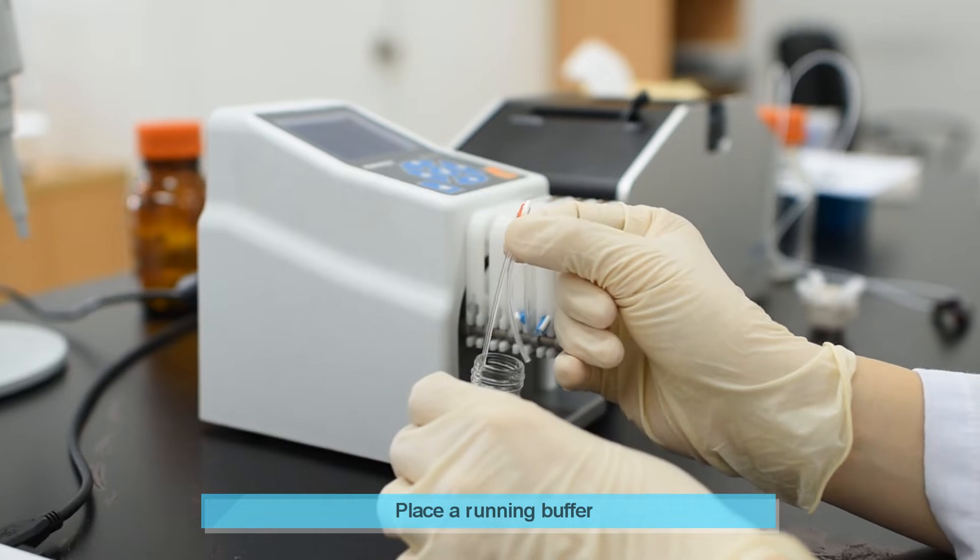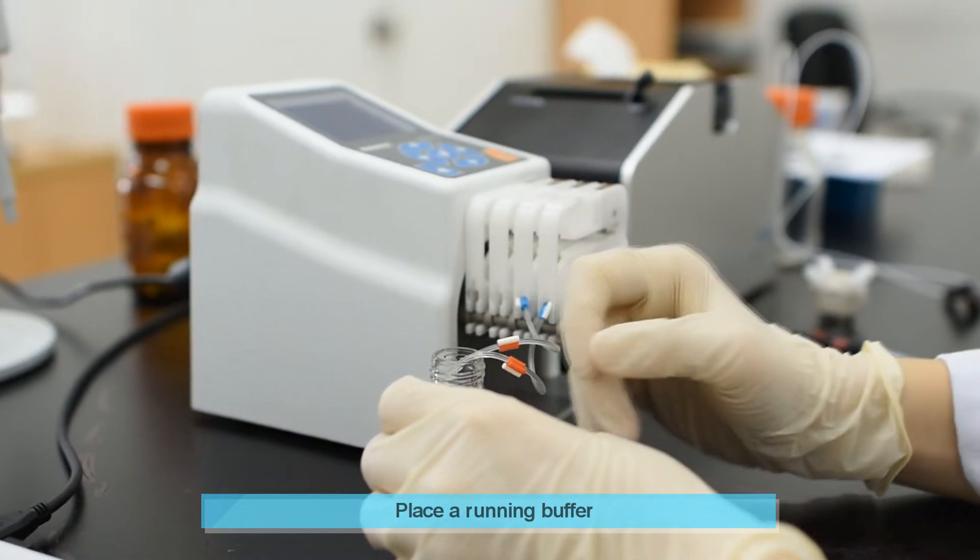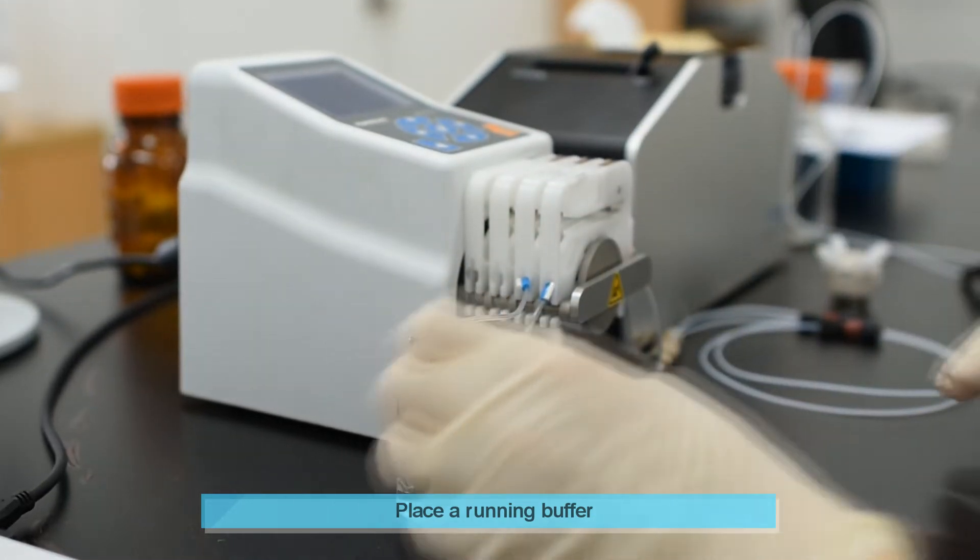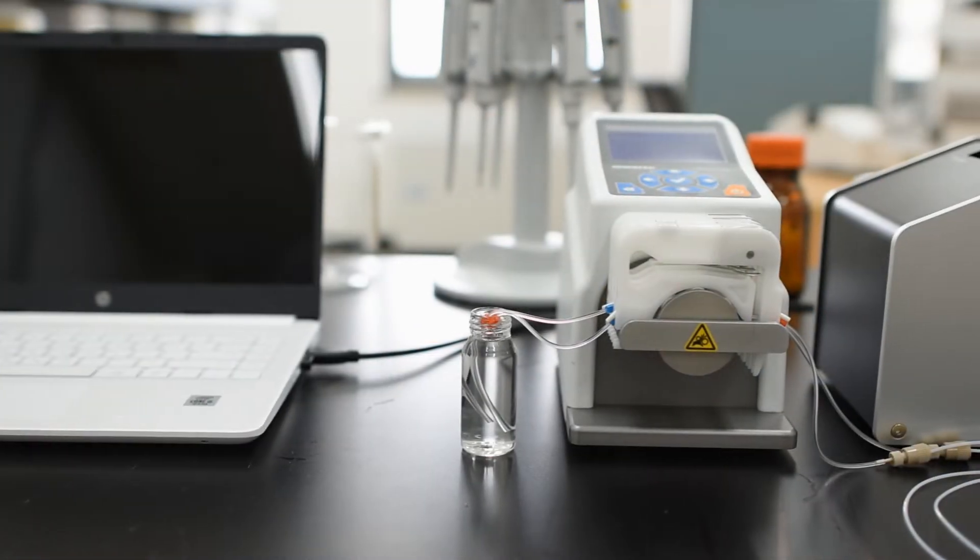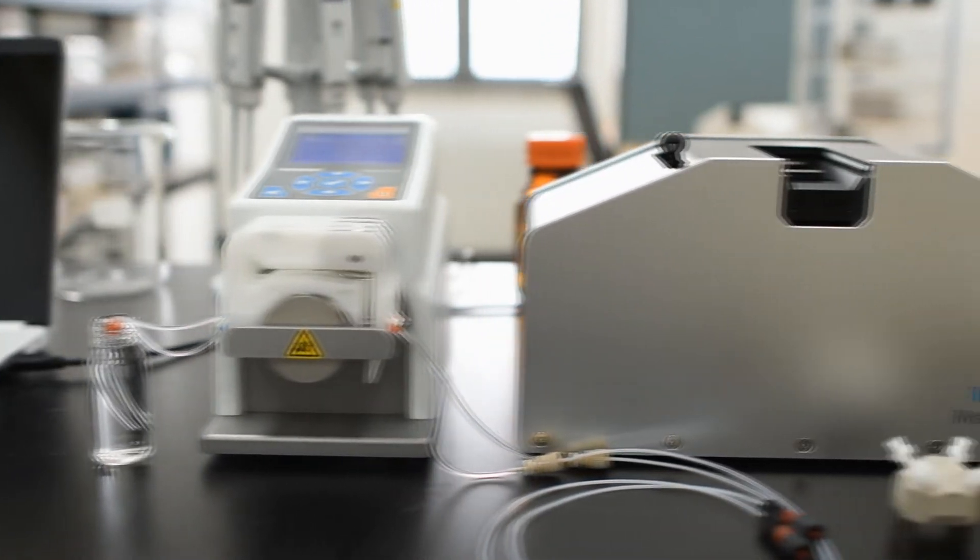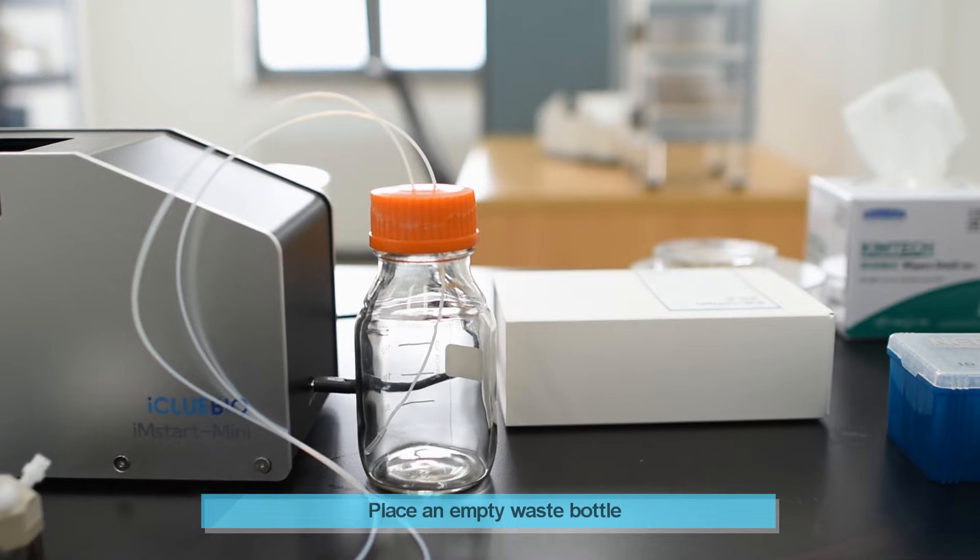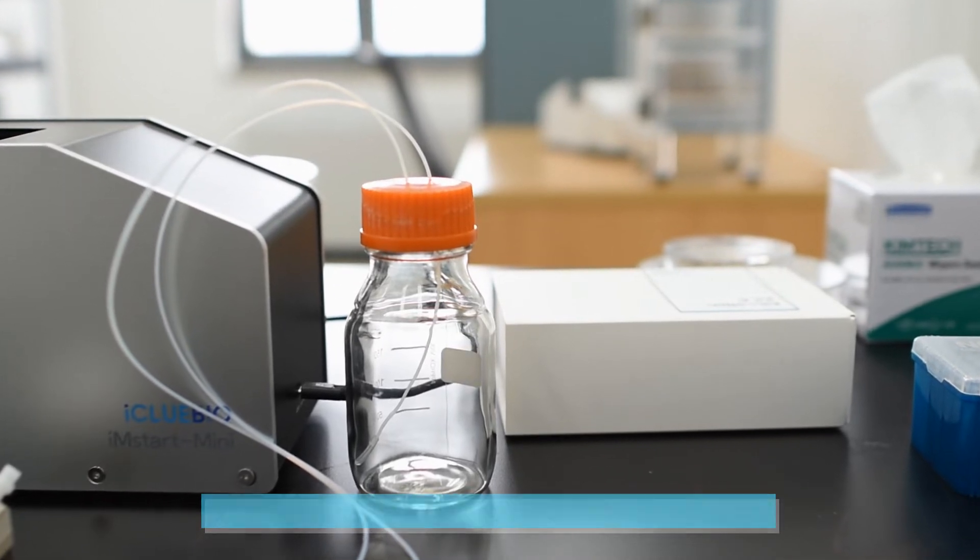Place your running buffer on the left side of the pump, and place the waste bottle on the right side of the instrument. Make sure the bottle is empty.